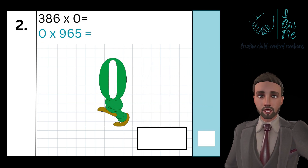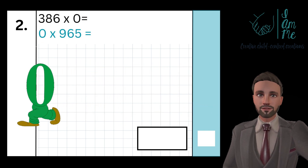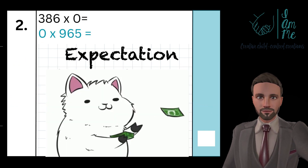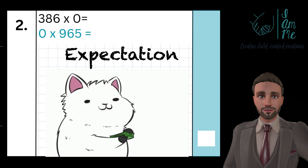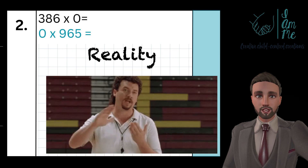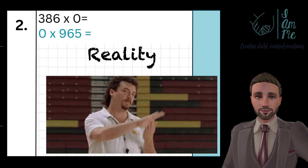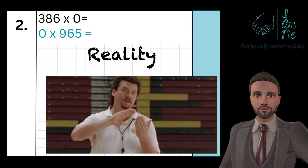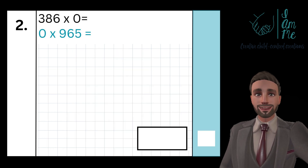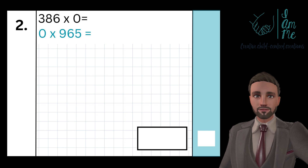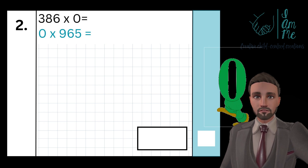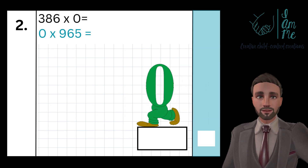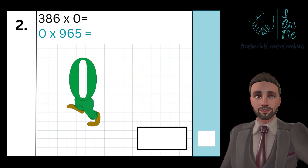Imagine you giving nothing to 547 people — you've given them all absolutely nothing. What happens if 547 people gave you nothing? Still you've gained nothing because they've given you nothing.